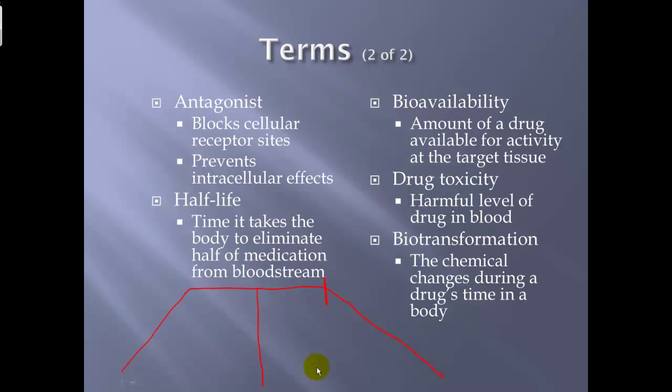For example, if you started with a 500-milligram capsule but by the time it reached the target tissue only 100 milligrams remained, that would be the bioavailability. Drug toxicity is a harmful level of the drug in the blood. Biotransformation: most drugs, especially cardiac drugs, do not come in their active form — they need to be biotransformed, a process generally facilitated by the liver and oxidation systems in the body.